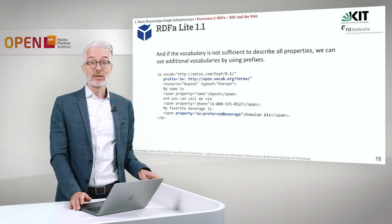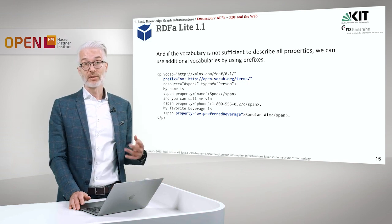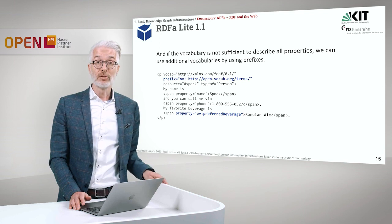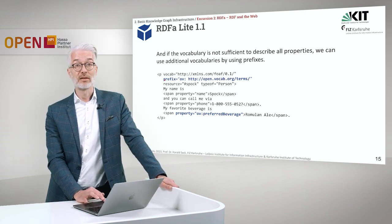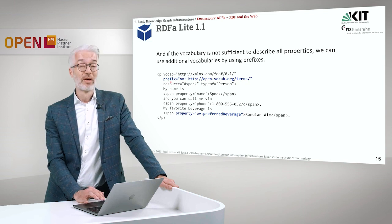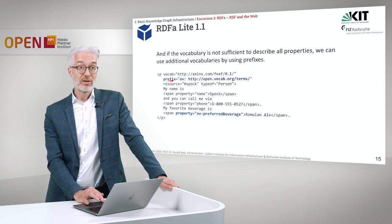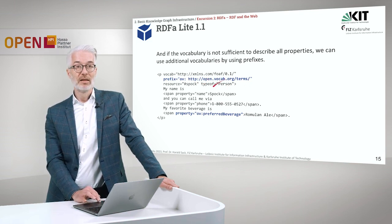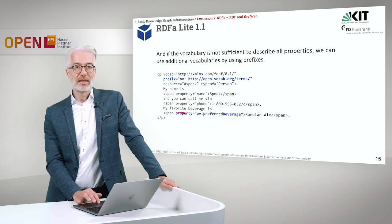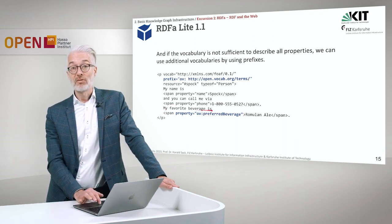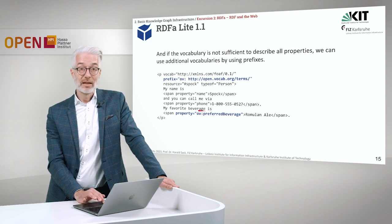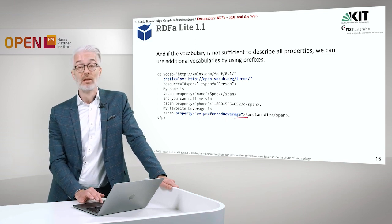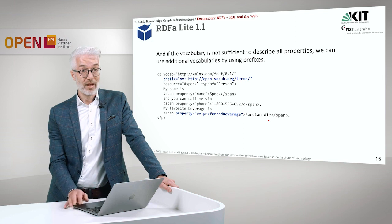If one vocabulary is not sufficient to describe all the properties we want, we can use additional vocabularies. Just as in RDF, we create new prefixes using the prefix attribute. I write prefix equals and give the URI of a new namespace — for example, open vocabulary. Then below the phone number, I also write for Spock: 'My favorite beverage is Romulan ale.' The property comes from open vocabulary. You might be surprised, but it's there: preferred beverage — Romulan ale. As easy as that.